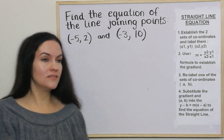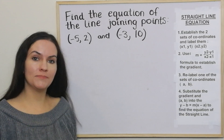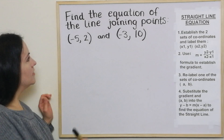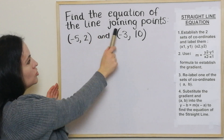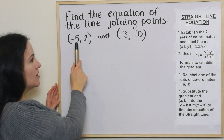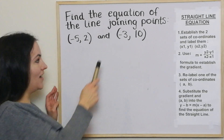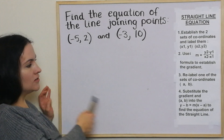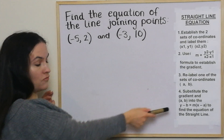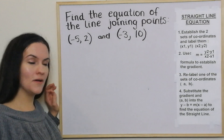This is a typical example of the type of question you can expect to see. It's asking us to find the equation of the line joining the points negative 5, 2 and negative 3, 10. We just go through this four step guide in order to be able to do it.